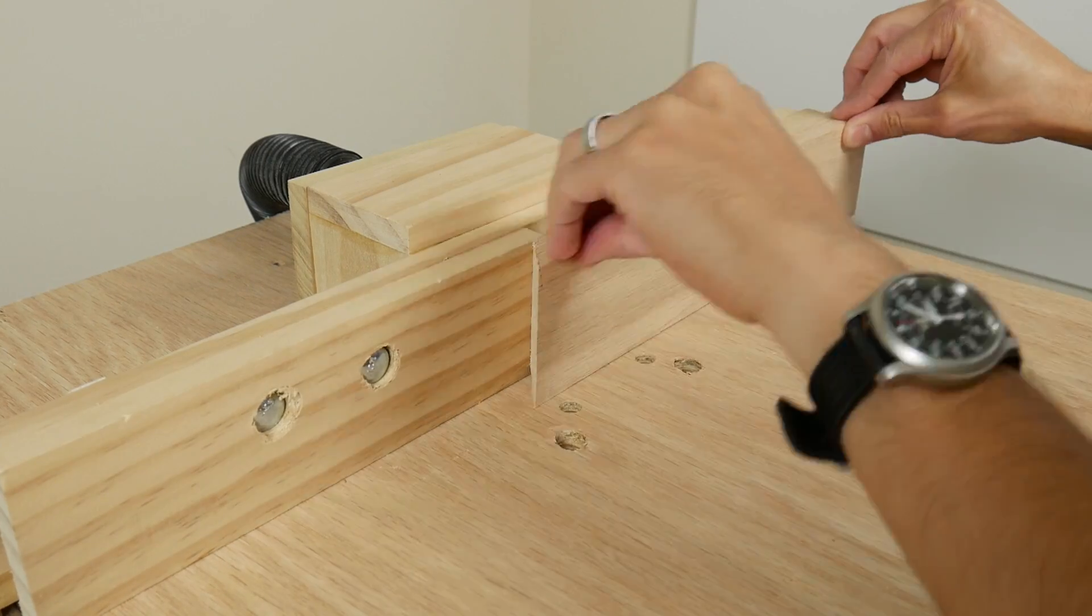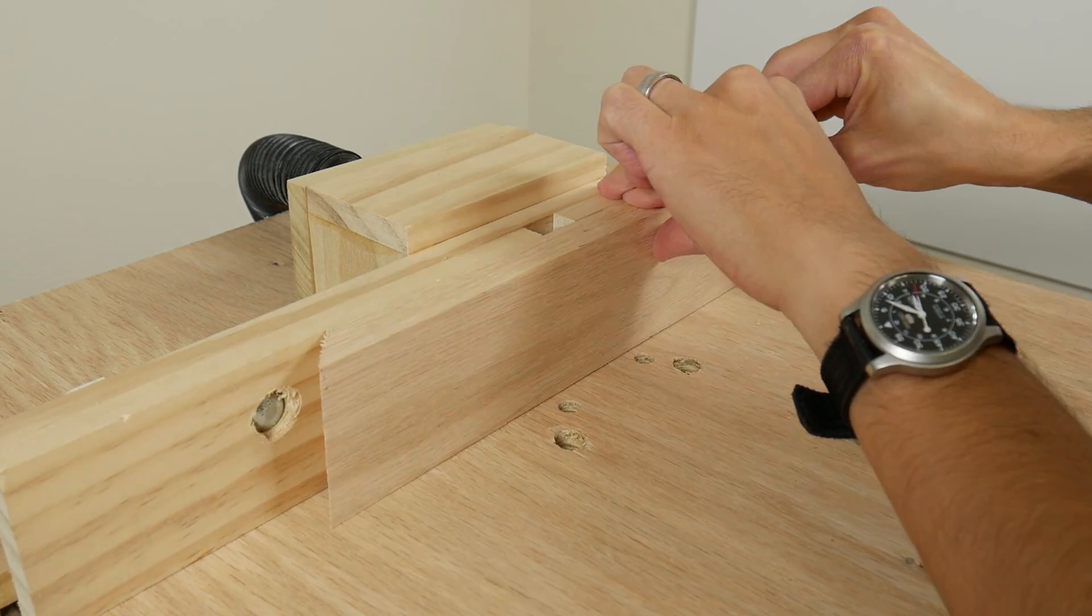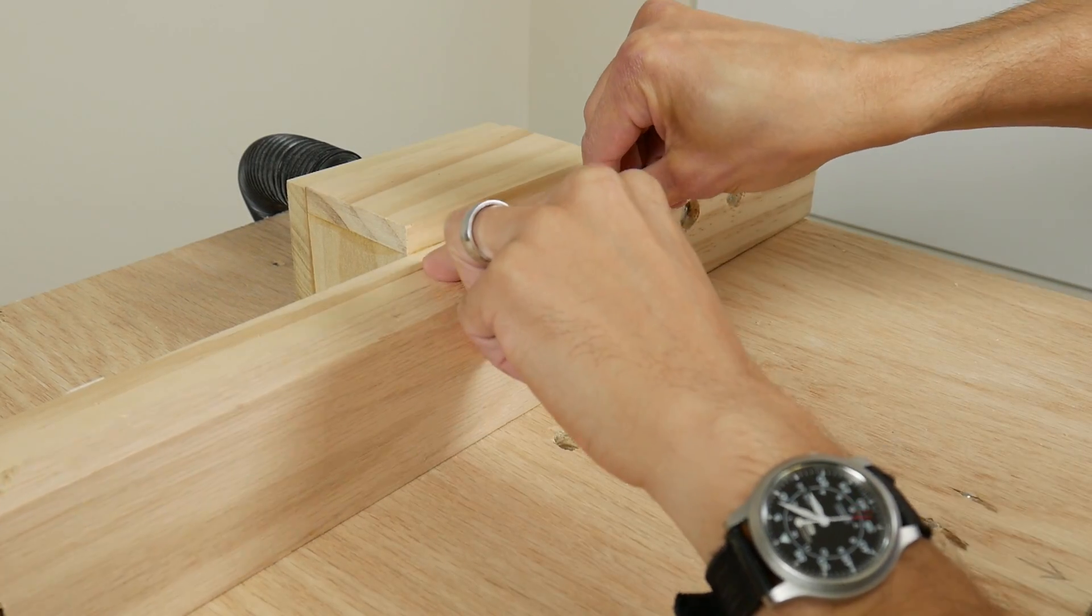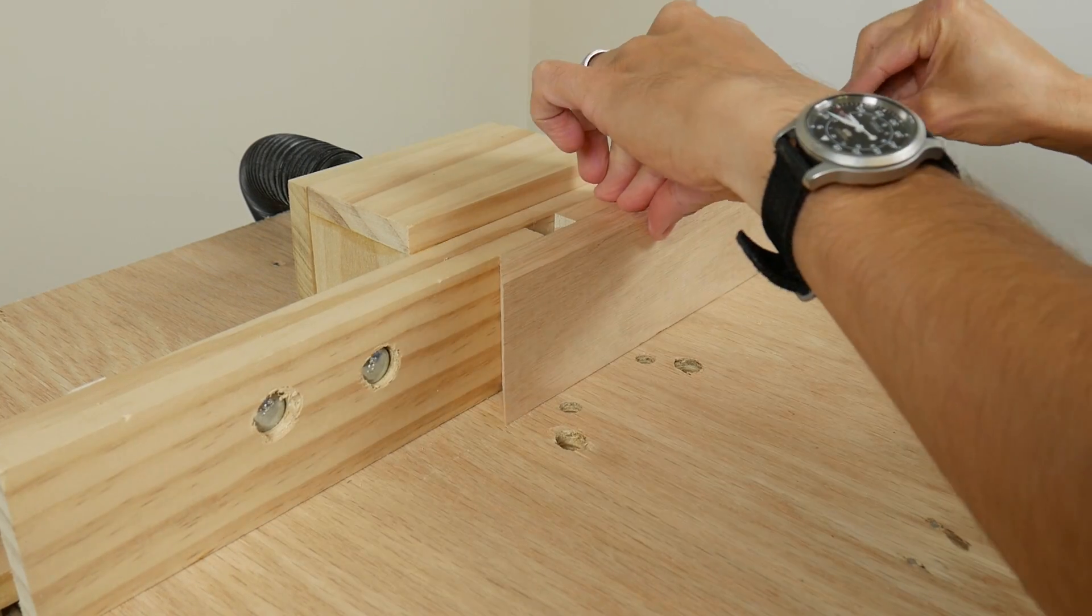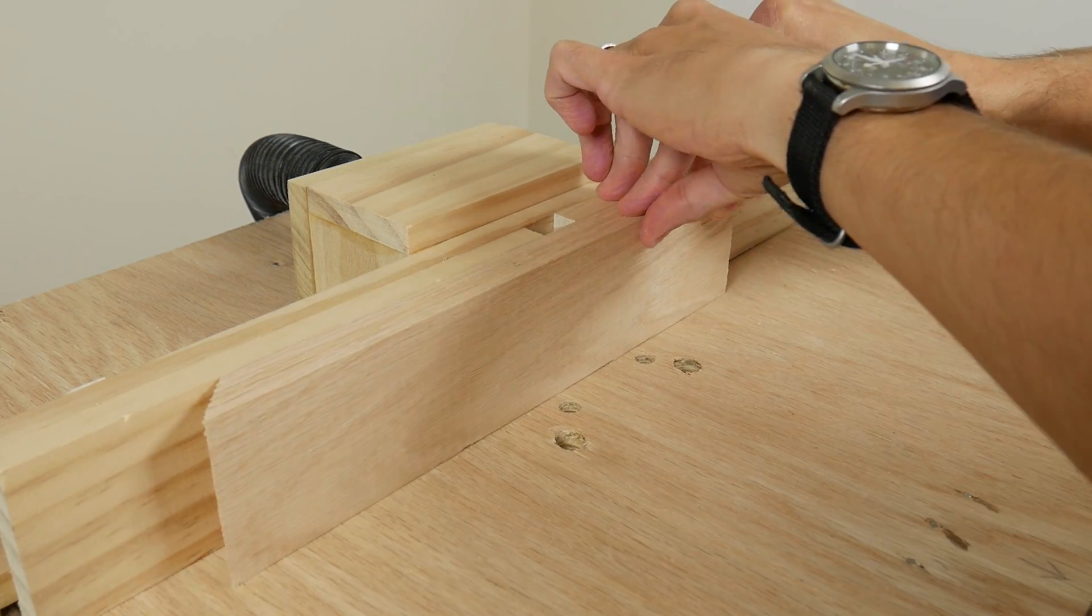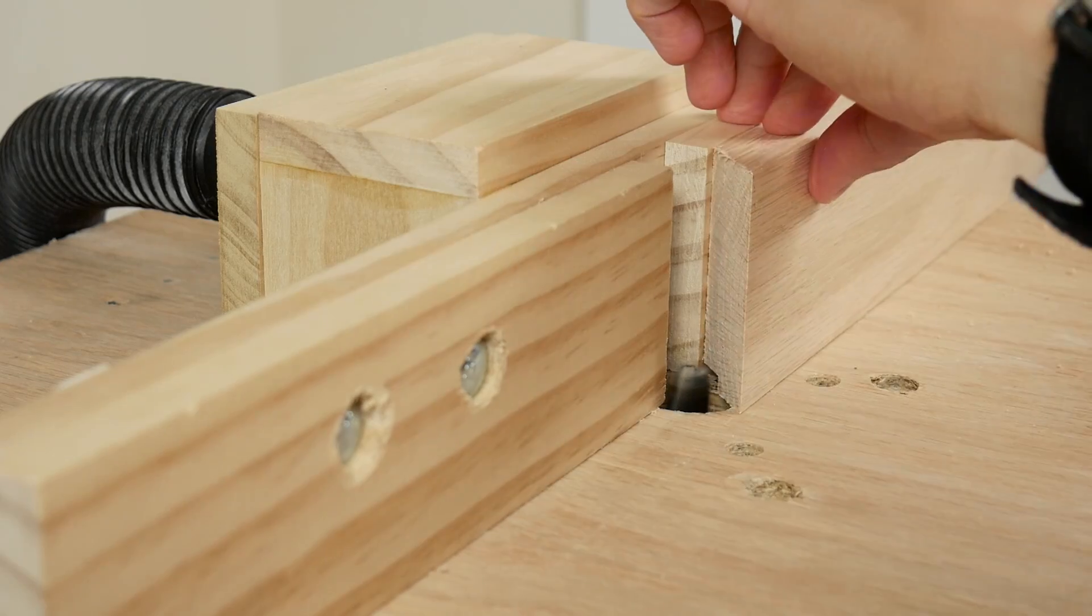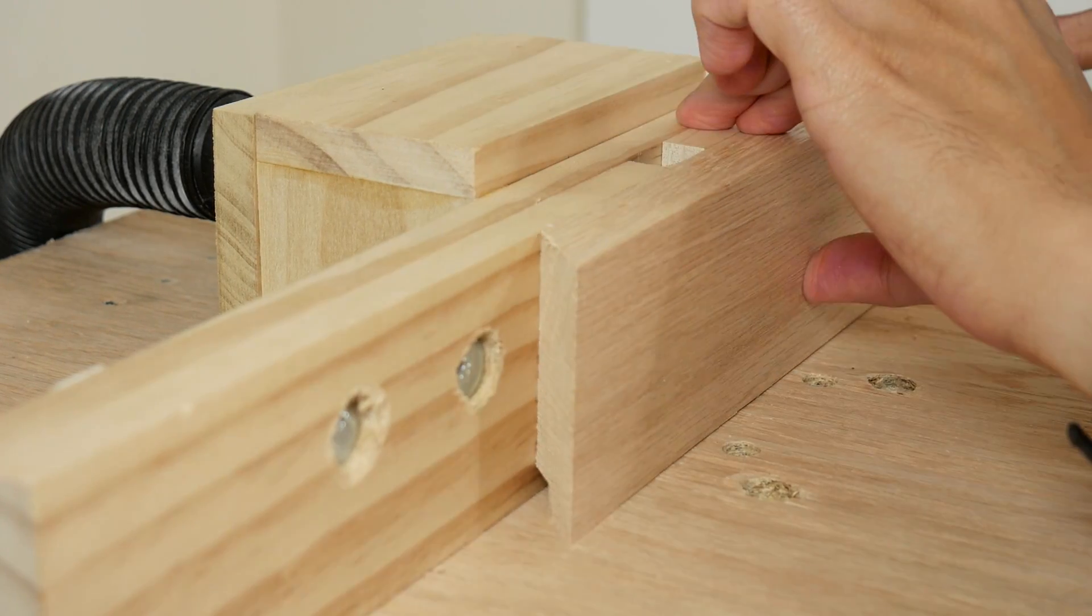I used my homemade router table and a half inch straight bit to route out a quarter inch rabbet on the inside of the four frame pieces. I took several passes to get this rabbet to a depth of one inch.